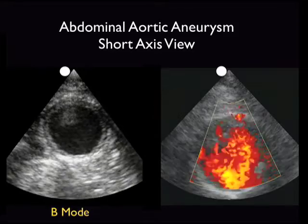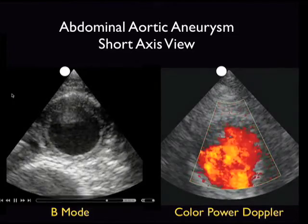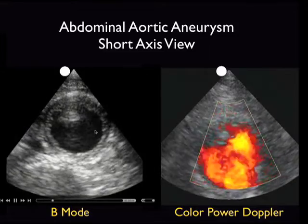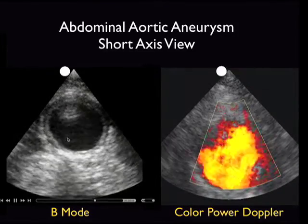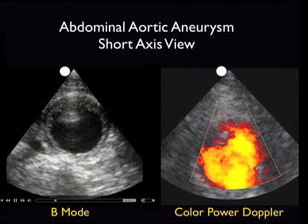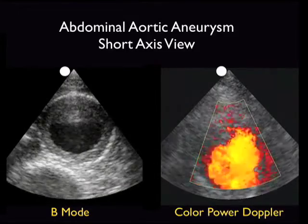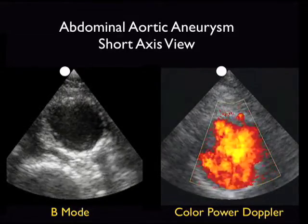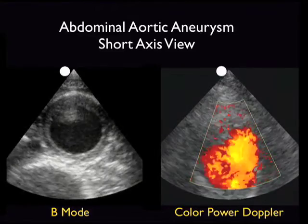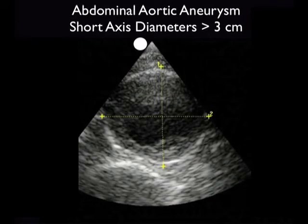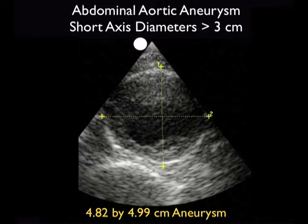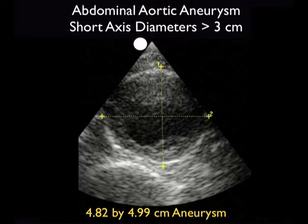Here's a short axis view of a very large abdominal aortic aneurysm in a patient who presented to the emergency department with abdominal and back pain. The B-mode image on the left shows the large triple-A, with the spine as our landmark for determination of the aorta. The color power Doppler image on the right shows pulsations of blood within this triple-A. Measuring outer wall to outer wall in short axis, including the inner lumen and outer thrombus, we get a measurement of 4.8 by 4.9 centimeters, meeting the criteria of a triple-A greater than 3 centimeters.